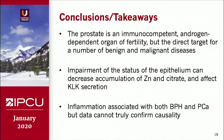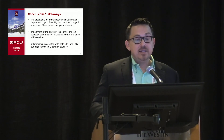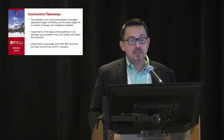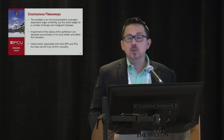In conclusion, this talk should serve as a lead-in to put things in perspective and recall foundational concepts. The prostate is an immunocompetent and androgen-dependent organ of fertility, and the direct target of a number of benign and malignant diseases. Impairment of the epithelium can decrease accumulation of zinc and citrate and affect secretion of the kallikreins. Inflammation is associated with both BPH and prostate cancer, but as of now the data cannot truly confirm causality.